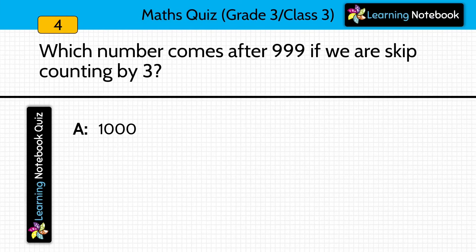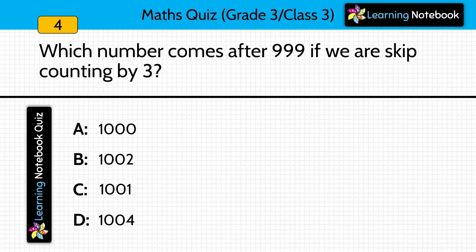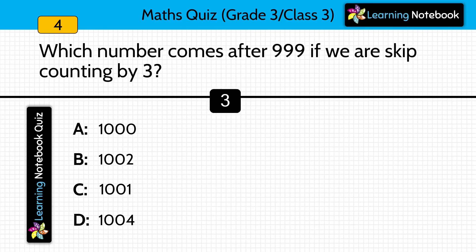Next: Which number comes after 999 if we are skip counting by 3? Answer is option B, 1002.